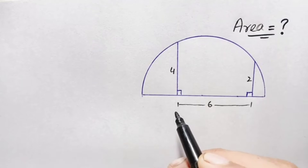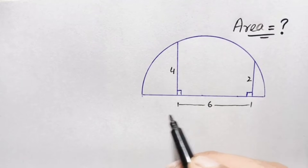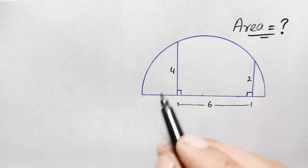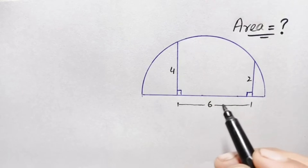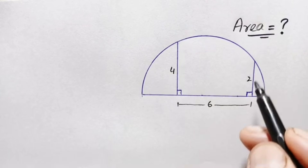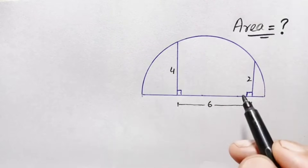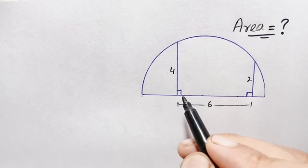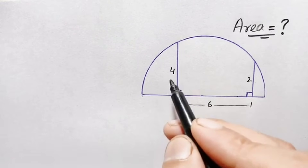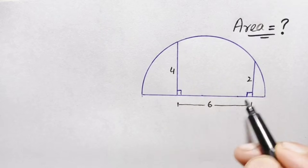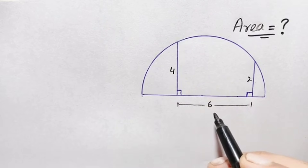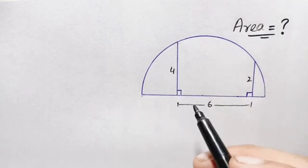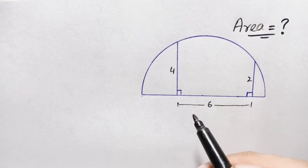Hello everyone, welcome. Today we have a new interesting geometry math problem. We are given a semicircle with two perpendiculars to the diameter. The smaller one has a length of two units, the right one has a length of four units, and the distance between these two perpendiculars is six units. We have to find out the area of this semicircle.